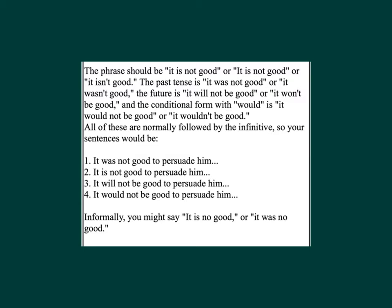All of these are normally followed by the infinitive. So your sentences will be: 1) 'It was not good to persuade him.' 2) 'It is not good to persuade him.' 3) 'It would not be good to persuade him.' 4) 'It would not be good to persuade him.' Informally, you may say 'It is no good' or 'It was no good.'